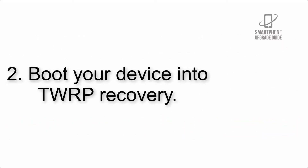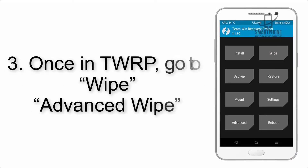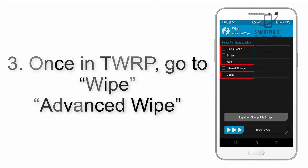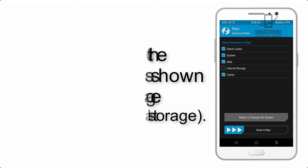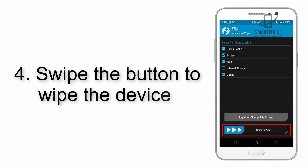Step 2: Boot your device into TWRP recovery. Once in TWRP, click on Wipe, then Advanced Wipe, and select the checkboxes as shown in the image, excluding internal storage.